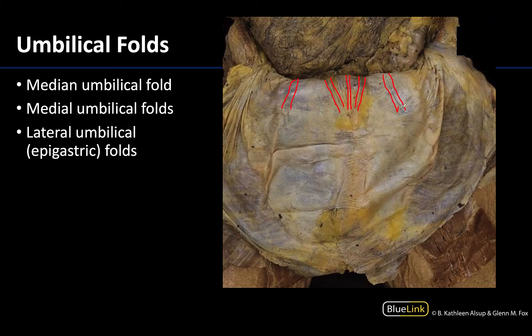This fold is unique in that it is not peritoneum covering a developmental remnant, but rather it is covering the fully patent inferior epigastric vasculature, which is very important in supplying and draining the inferior portions of the abdominal wall.